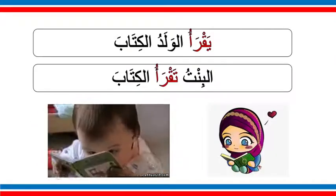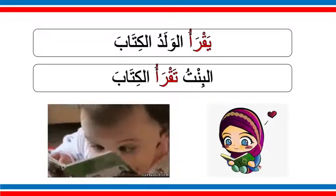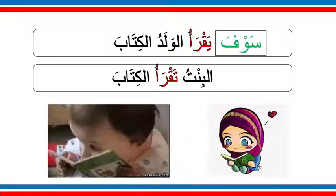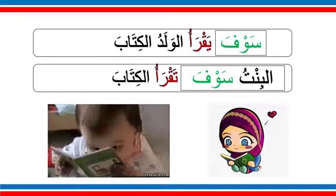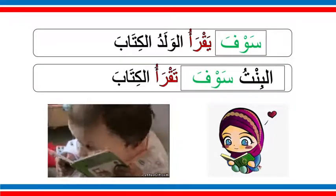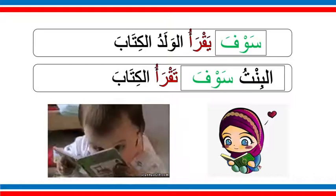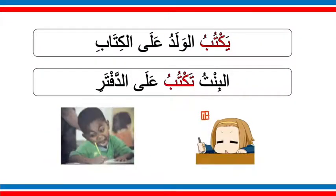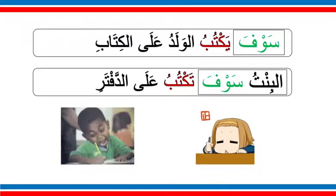Let's go to the examples. We have يقرأ الولد الكتاب or البنت تقرأ الكتاب. We will add سا or سوف — it's the same. So we will say: سوف يقرأ الولد الكتاب, or البنت سوف تقرأ الكتاب. Remember that سوف should come before the verb, so it's البنت سوف تقرأ الكتاب — not سوف البنت تقرأ. سوف should always be followed by a verb. Next: سوف يكتب الولد على الكتاب or البنت سوف تكتب على الدفتر.